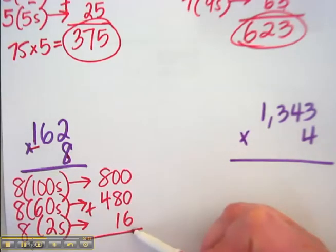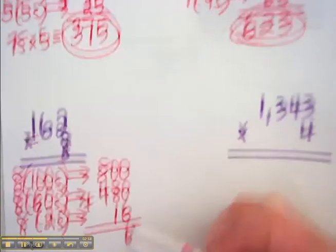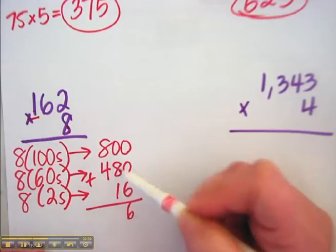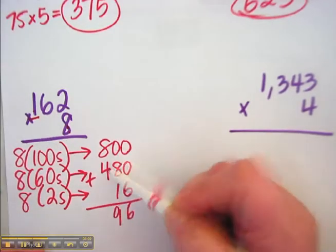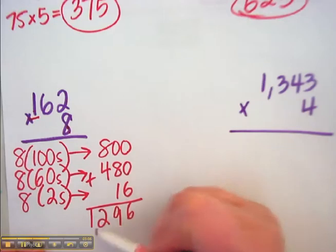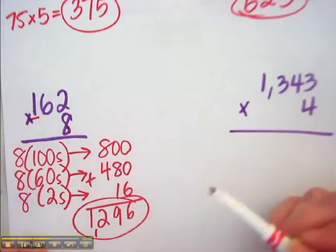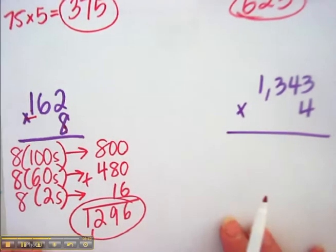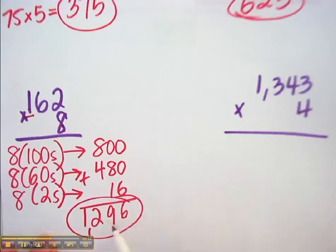0, 0, and 6 is 6. 8 and 1 is 9. And then 8 and 8 and 4 would be 12. My answer is 1296. So you should be able to look at that and then do the problem on your homework with no trouble.